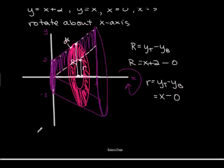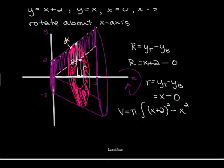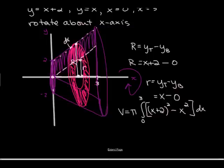Now we write the equation for volume. Volume equals pi times (big R squared minus little r squared) times dx. Big R is x plus 2, and little r is x. The limits of integration are from x equals 0 to x equals 3, since we're stacking washers along the x-axis between those boundaries. From here, multiply out and integrate. You should get 30 pi.